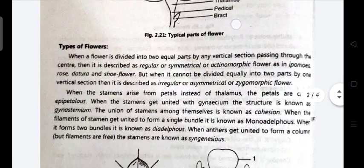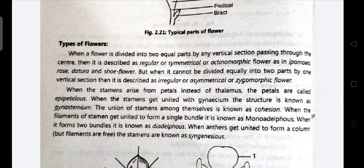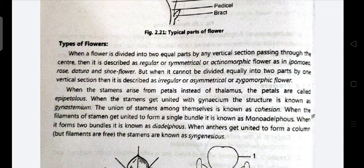Now, types of flowers. When a flower can be divided into two equal parts by a vertical section passing through the center, it is described as a regular, symmetrical, or actinomorphic flower. Examples include Ipomoea, rose, Datura, and shoe flower (China rose).